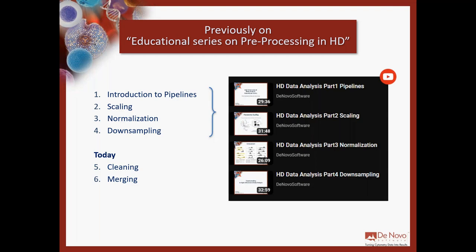We will also speak a little bit about scaling later on. Normalization is sometimes really useful, sometimes a little bit risky — there are pros and cons about data normalization. Downsampling is most of the time done to speed up calculation, but there are types of downsampling in FCS Express called density-dependent downsampling that also improve the data by allowing you to enrich in rare events. Today we will focus on data cleaning and data merging, concluding this educational series on pre-processing. After this, our data will be ready to be processed by TSNE, UMAP, FlowSOM, Phenograph, Spade, K-Means, and whatever you want.